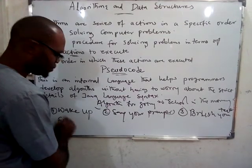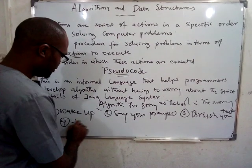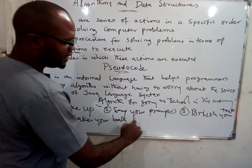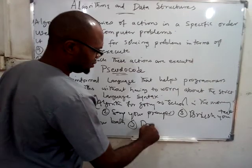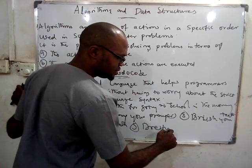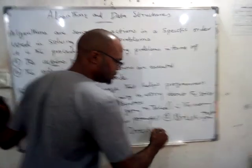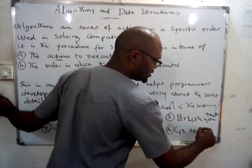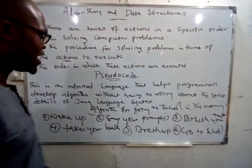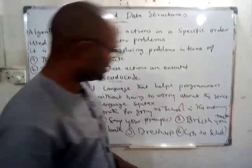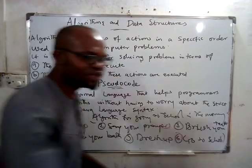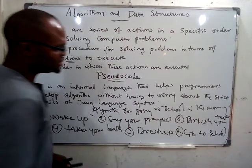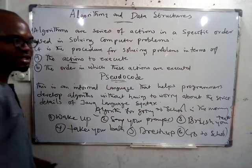Number four: take your bath. Number five: get dressed. Then number six: go to school. So this is a simple algorithm solving the problem of going to school, and it is written in a simple language that everybody can understand.